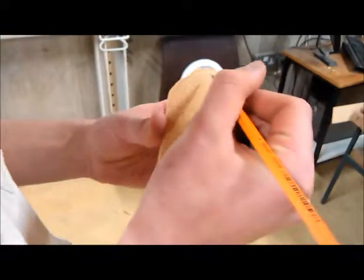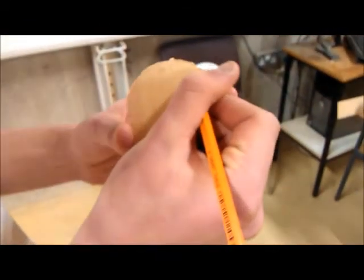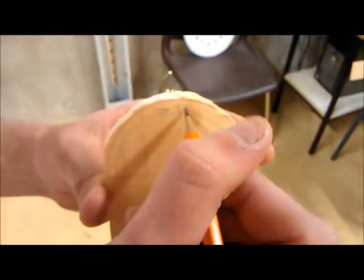When spokeshaving, we work from both sides of the piece. This is to prevent breakout like you would have when planing against the grain using a hand plane.